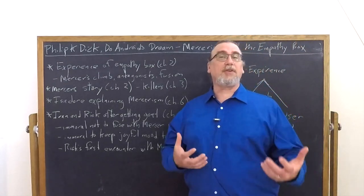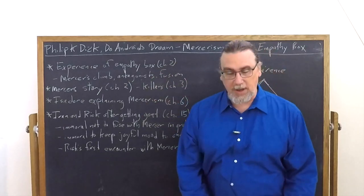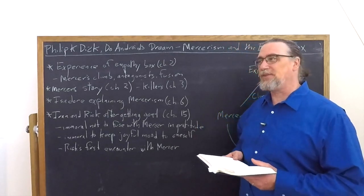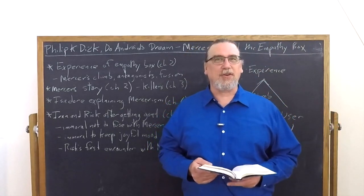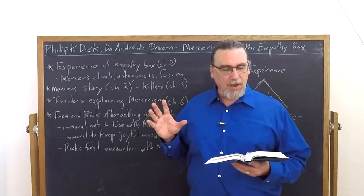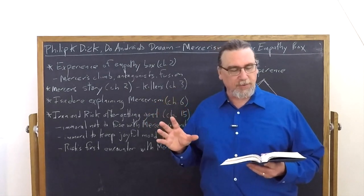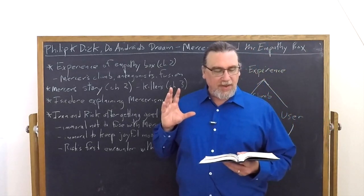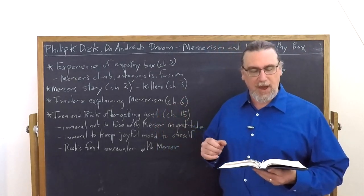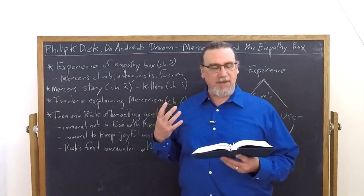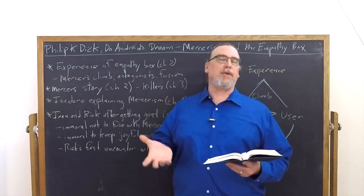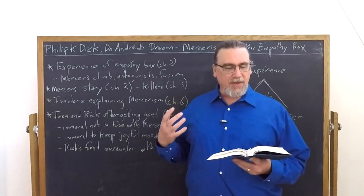We first encounter the empathy box and Mercer in chapter two through the eyes of John Isidore, the special who lives in a building all by himself. He says 'time to grasp the handles,' and crosses the living room to the black empathy box. When he turned it on, the usual faint smell of negative ions surged from the power supply. He breathed in eagerly, already buoyed up.